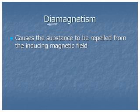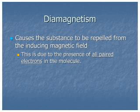In diamagnetism, the substance is repelled from the magnetic field that's inducing the magnetism. So paramagnetism pulls it in, diamagnetism pushes it out of the magnetic field. In fact, this can even be measured. With diamagnetism, it's because all of the electrons in the molecule are paired up.